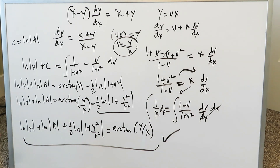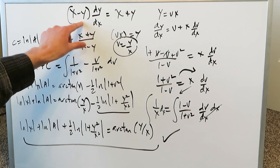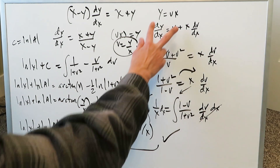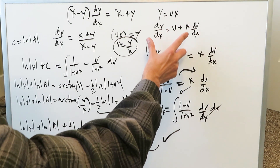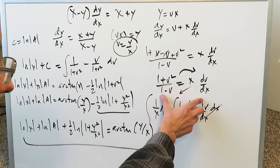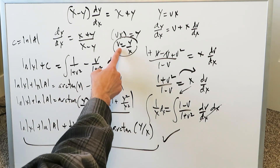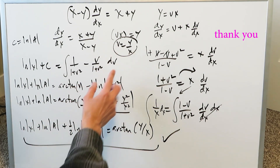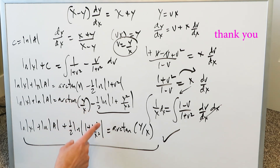That's pretty much it for this video. Remember, we're looking at homogeneous equations where you cannot cleanly separate the variables from the start. You use y equals vx and this procedure to bring it into the mix so you can then separate the variables. After separation, you integrate, substitute v equals y over x back in to eliminate v, and then simplify. It's a slightly more difficult technique but you have to know it — we can look at more examples in another video. Thank you for watching, have a nice day.